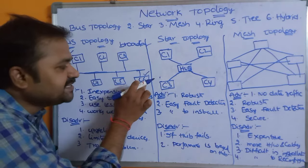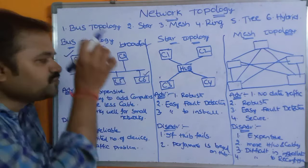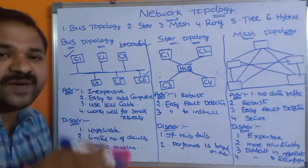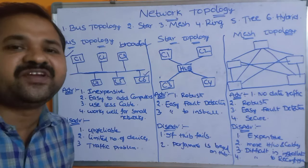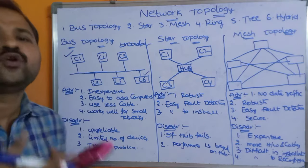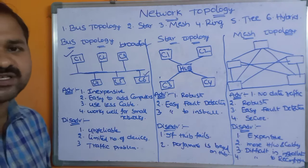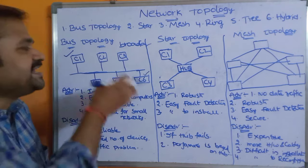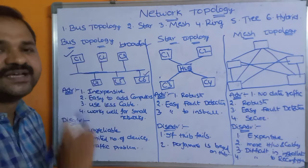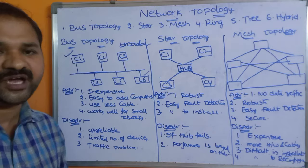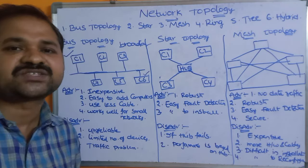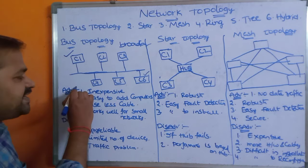Since the message contains a destination address — in this case C6's address — only C6 will accept that message. The remaining computers C2, C3, C4, C5 will ignore the message because the destination address does not match their own addresses.